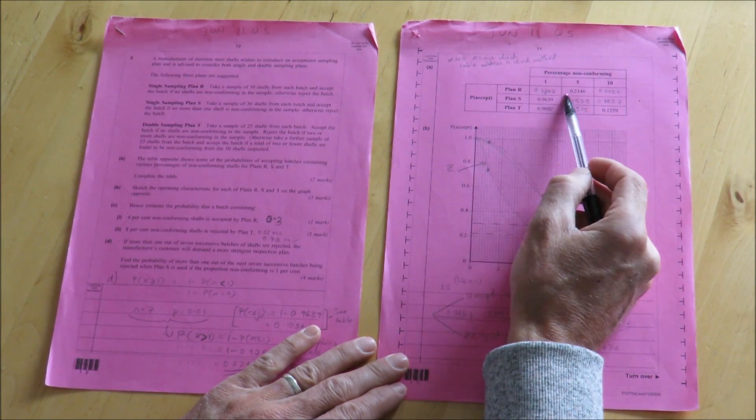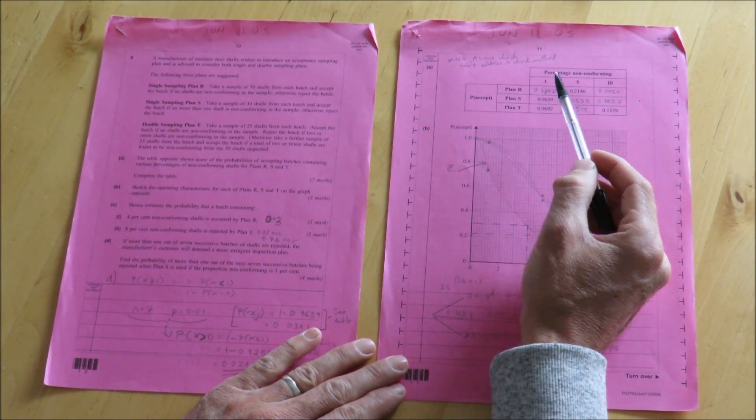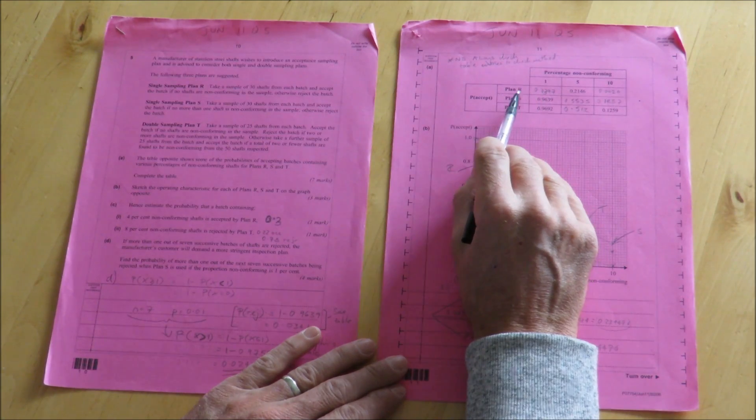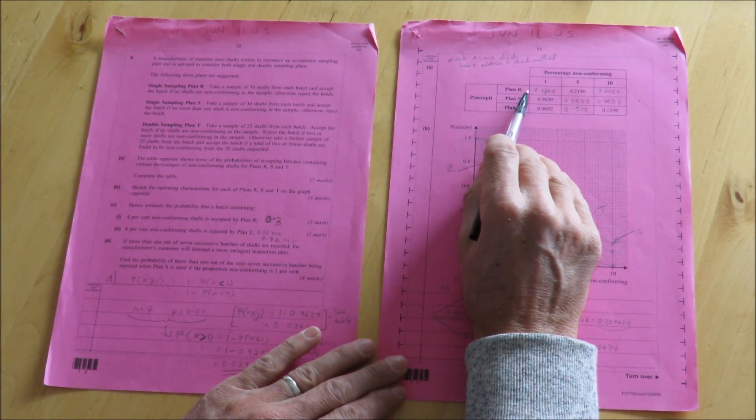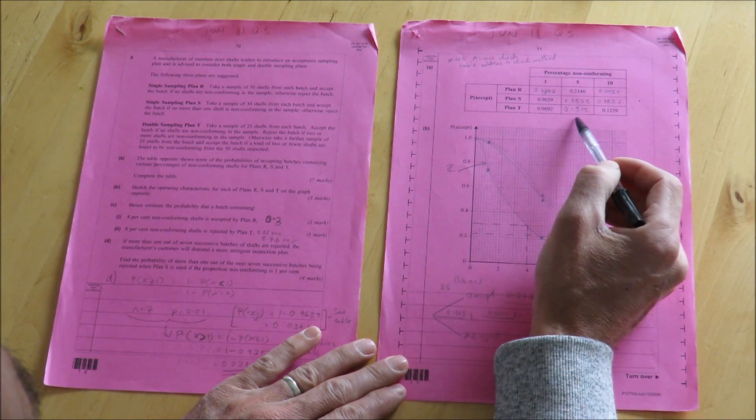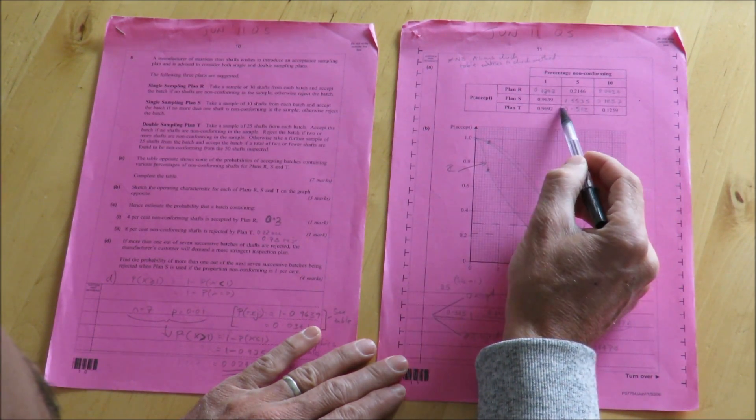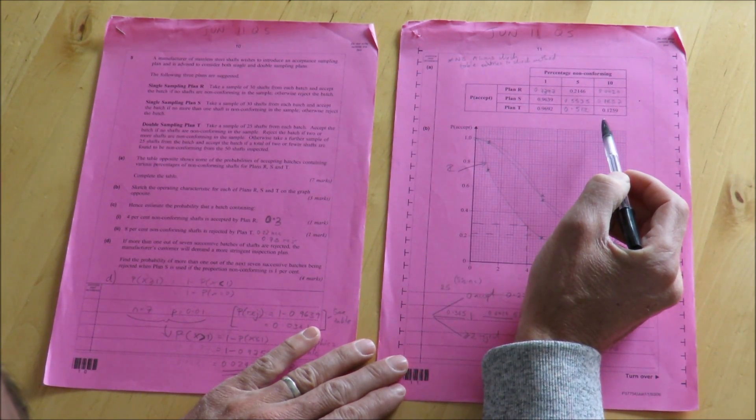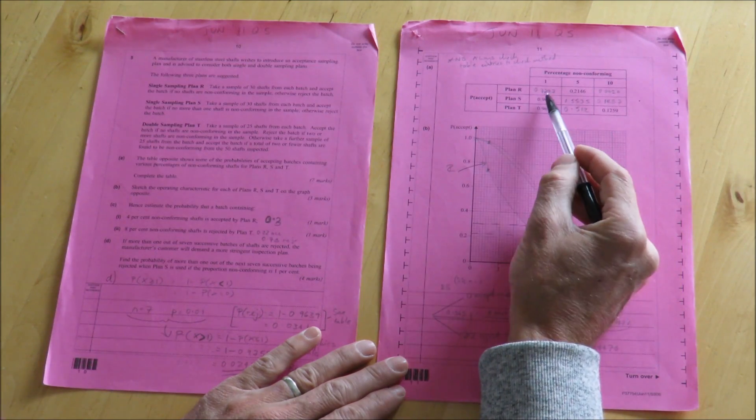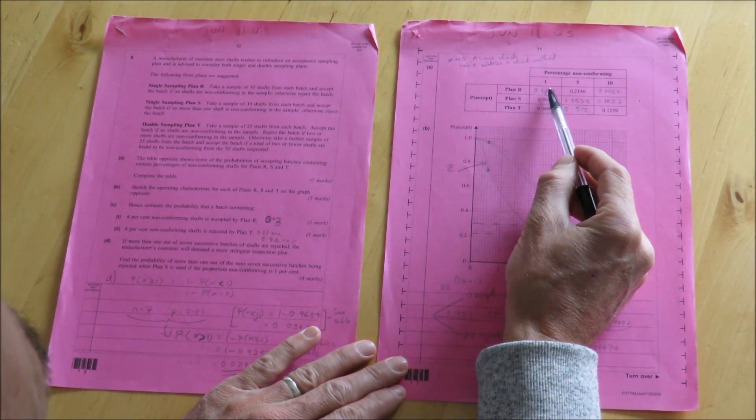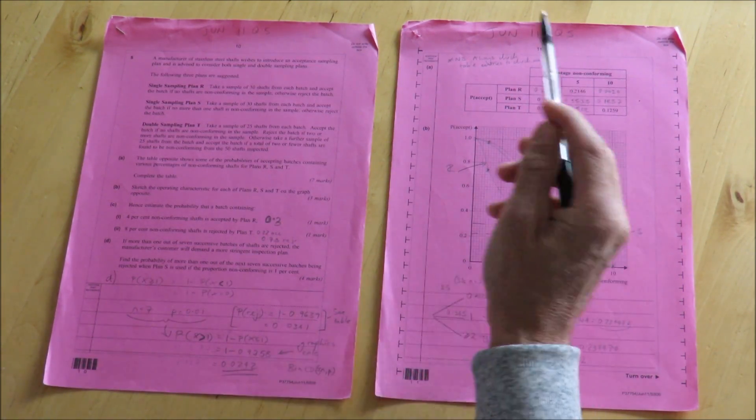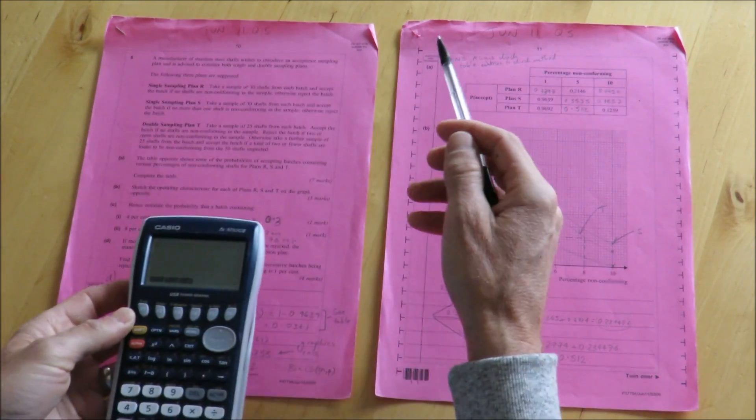The values here I'm going to show you how to get on a graphics calculator. The plans are a mixture of single sampling plans, R and S, and plan T is a double sampling plan, so this is by far the most difficult thing to calculate. So let's look at where this 0.7397 comes from, which is the first value that we're asked to find.